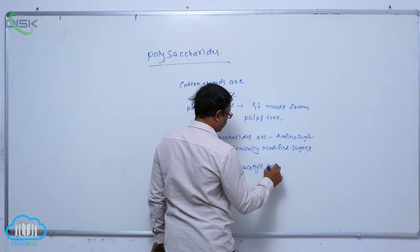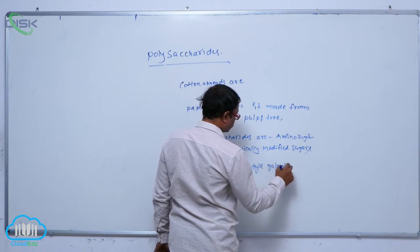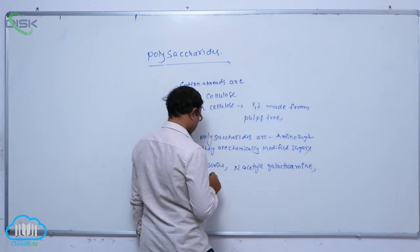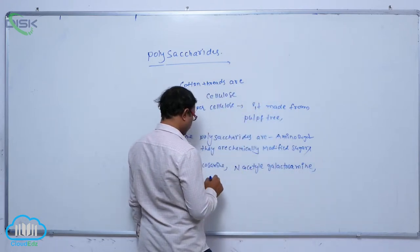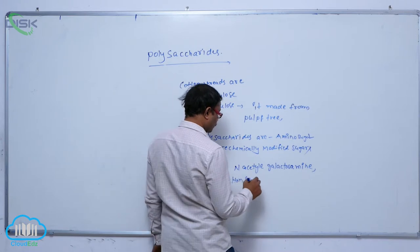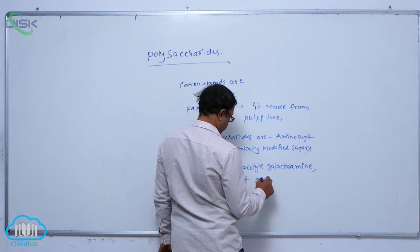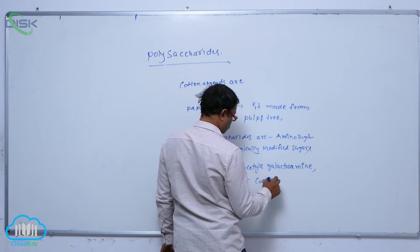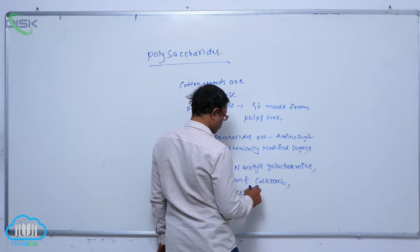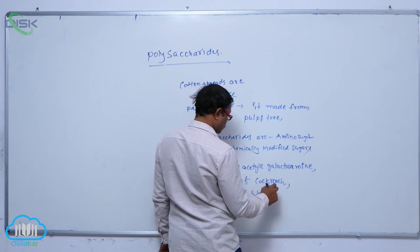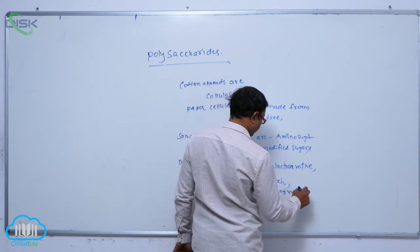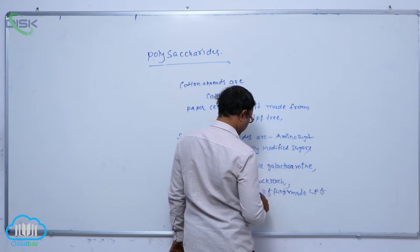N-Acetyl Galactosamine is another example. The exoskeleton of a cockroach and the cell wall of fungi are made up of Chitin.